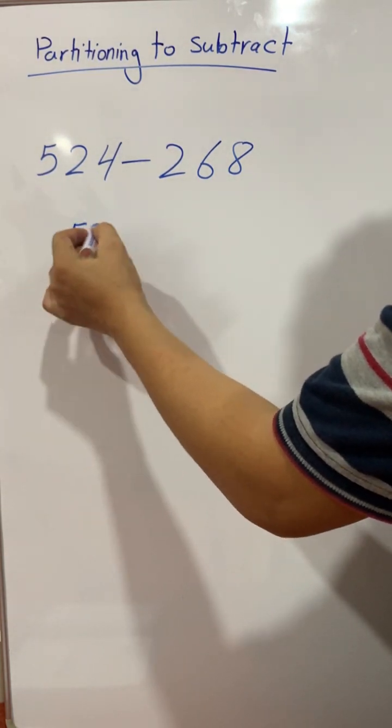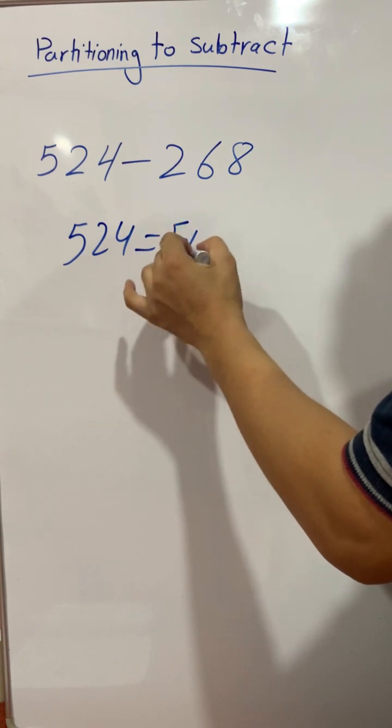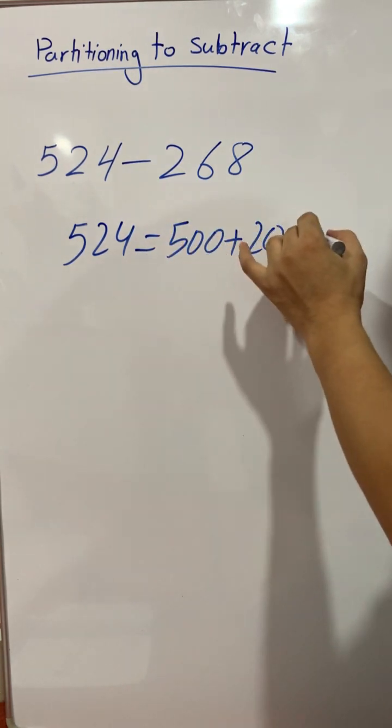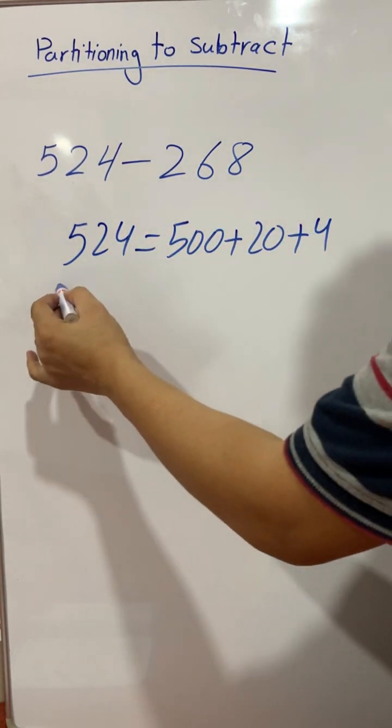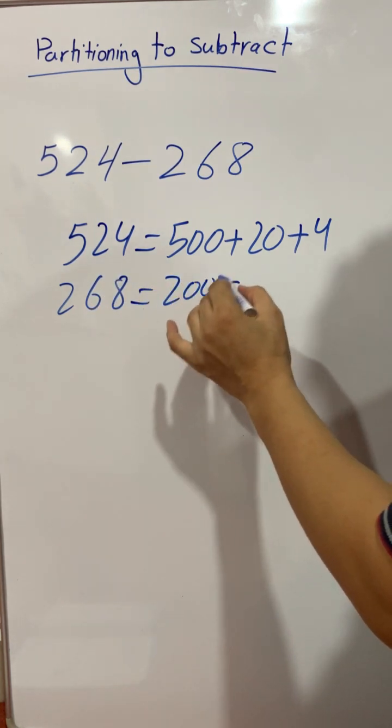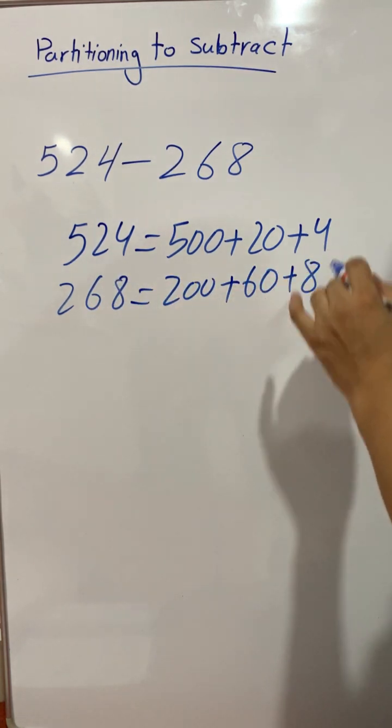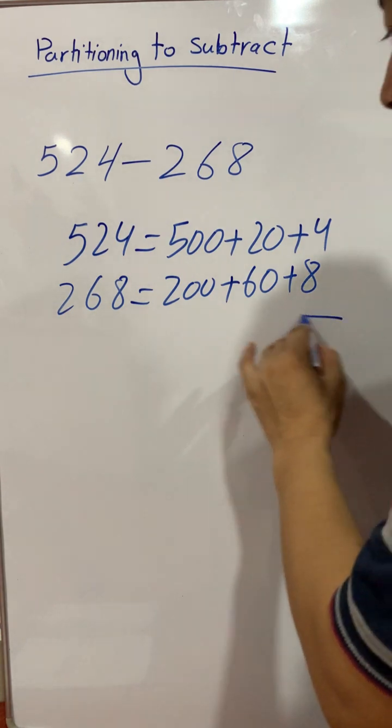So 524 can be partitioned into 500 plus 20 plus 4, and 268 can be partitioned into 200 plus 60 plus 8. Let's draw a line here.